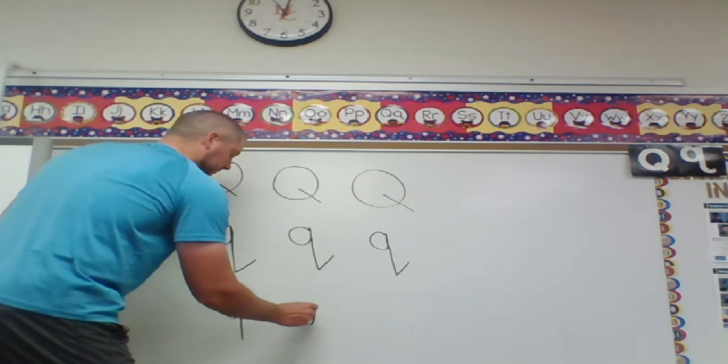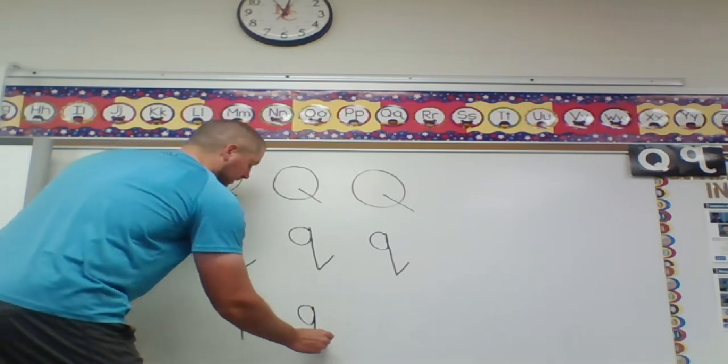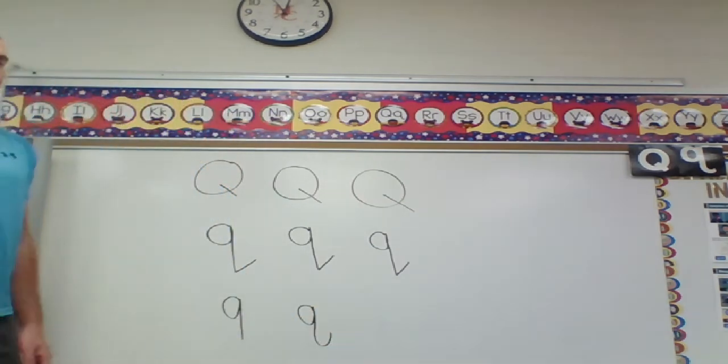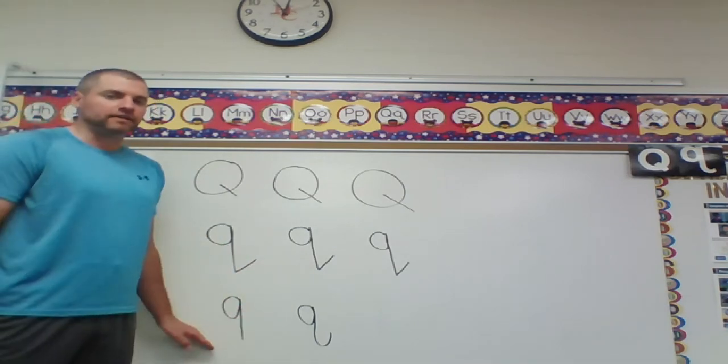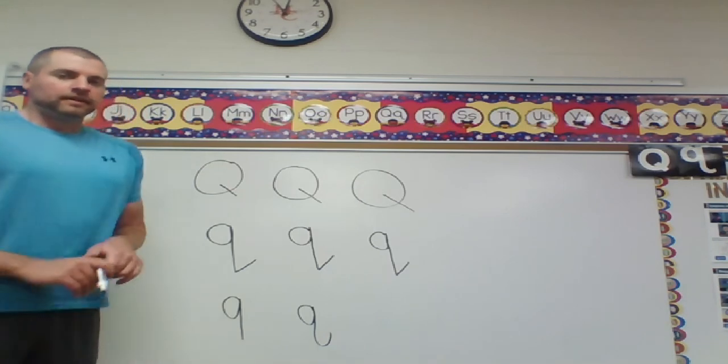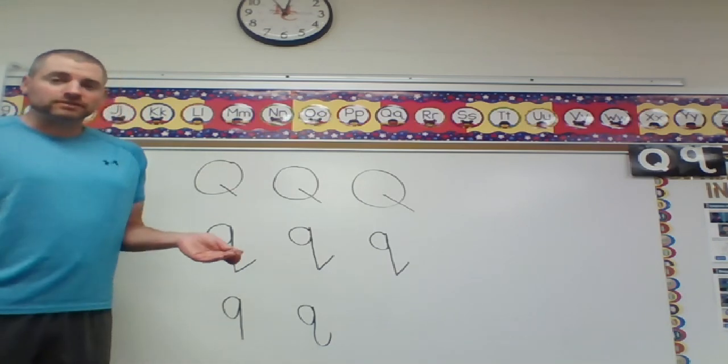You might also see one that looks like this, where it comes down, and then it loops up instead of my sharp, slanted line. Both of those are totally fine for Q's as well. So, now you're ready to practice on your own.